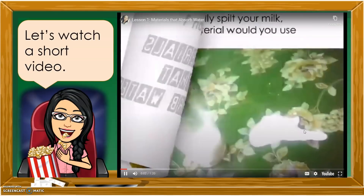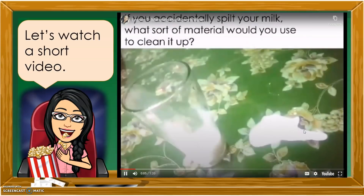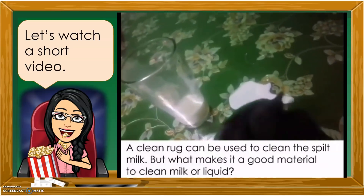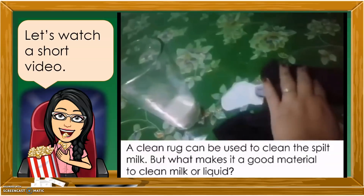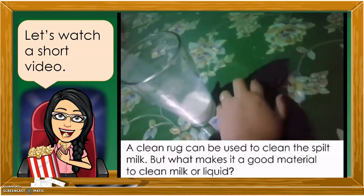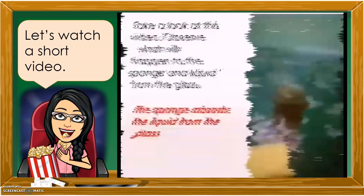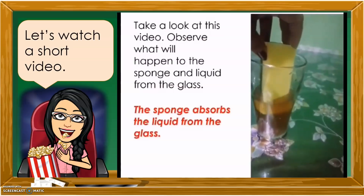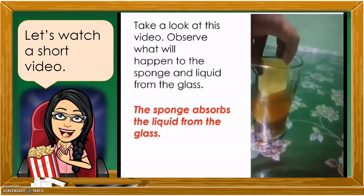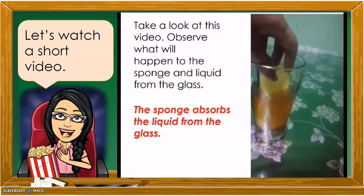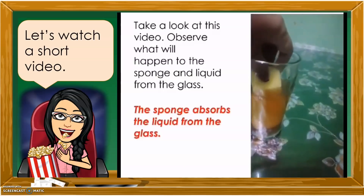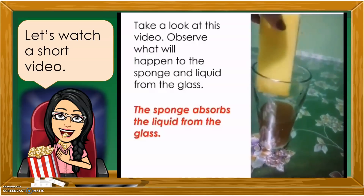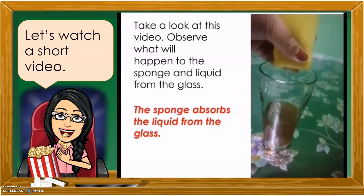Materials that absorb water — if you accidentally spilled your milk, what sort of material would you use to clean it up? A clean rug can be used to clean the spilt milk. Observe what will happen to the sponge and liquid from the glass. The sponge absorbs the liquid from the glass. What's our evidence? When we squeeze the sponge, liquid comes out.